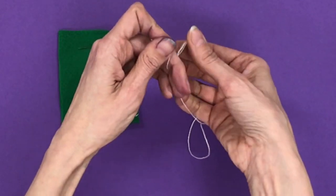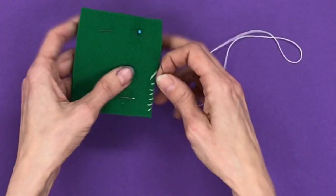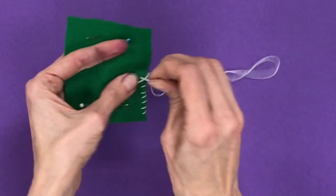You can tie a knot the same way you did at the end of the thread, but do a single knot. That way, it's easy for you to get the knot out when you are finished stitching.